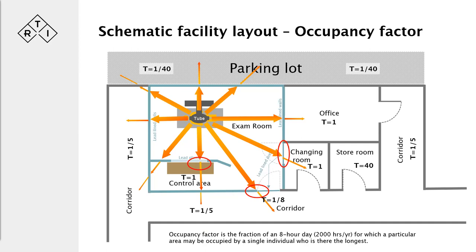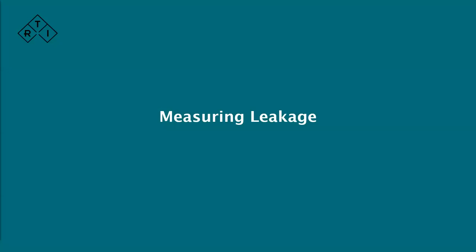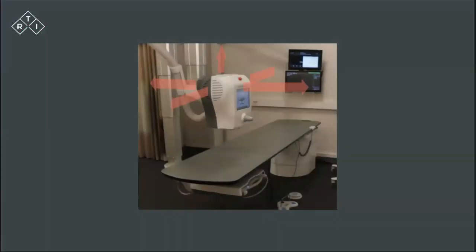Now let's discuss measuring leakage and scatter, starting with leakage. Since there is angular dependence on this type of radiation, leakage radiation is typically measured in five directions: front, rear, top, anode side, and cathode side. The distance from the focal spot to where you measure should be one meter. An instrument is needed to do this measurement.